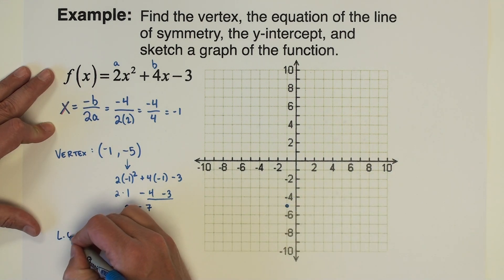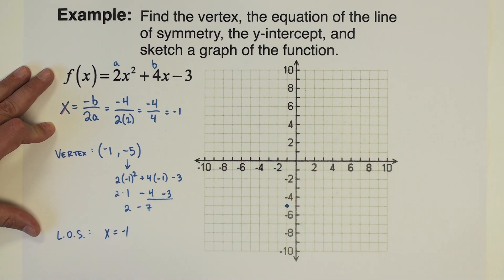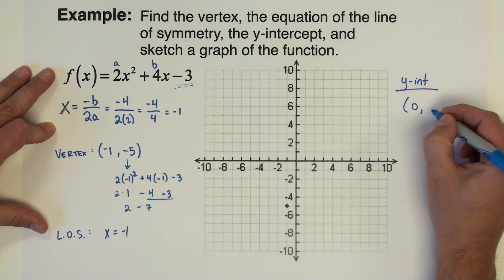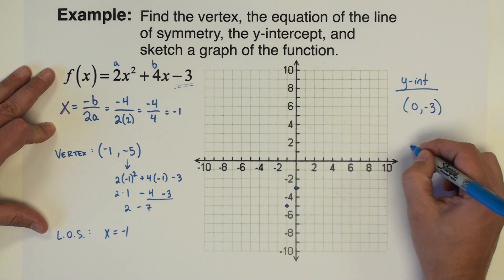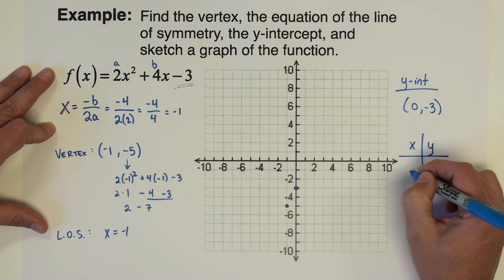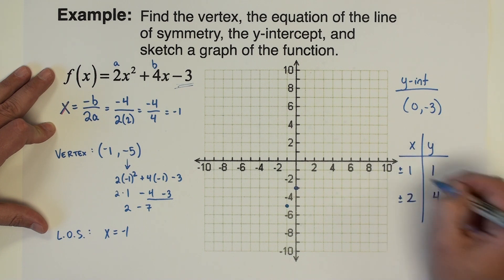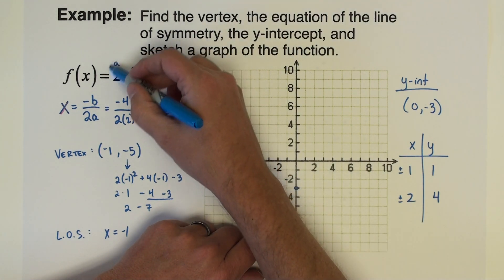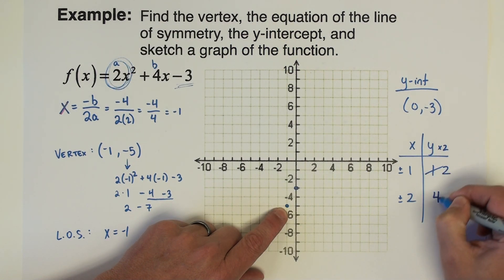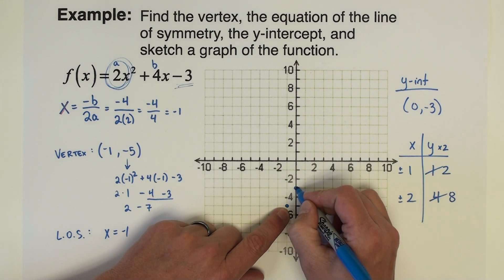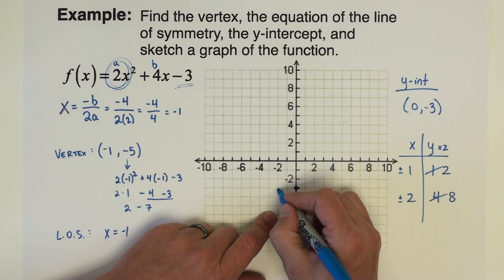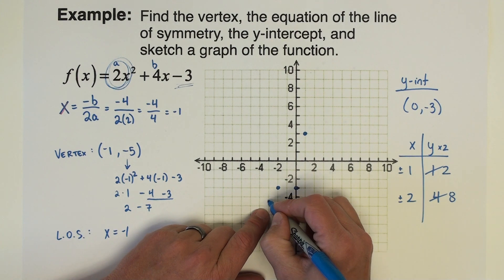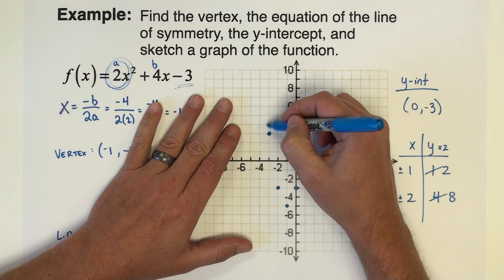Make sure to use order of operations correctly — square first. Our line of symmetry is x equals negative 1. Our y-intercept is the point (0, negative 3). Then we graph using our table of values: 1 squares to 1, 2 squares to 4 in both positive and negative directions. However, with an a value of 2, we multiply those y-values by 2. So 1 really squares to 2 — which is where our y-intercept is — and 2 goes up 8 in both directions. With five points plotted, we connect them and make our parabola.